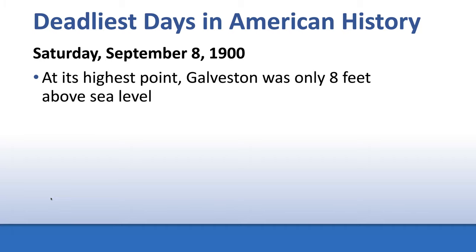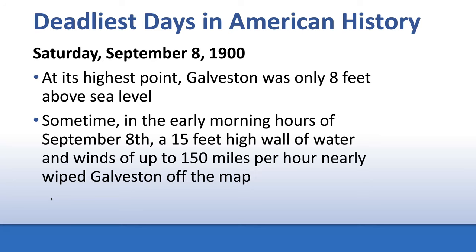At its highest point, Galveston was only eight feet above sea level — about the height of a door. It was a very flat area right at sea level. Sometime in the early morning hours of September 8th, a 15-foot-high wall of water and winds of up to 150 miles per hour nearly wiped Galveston off the map.